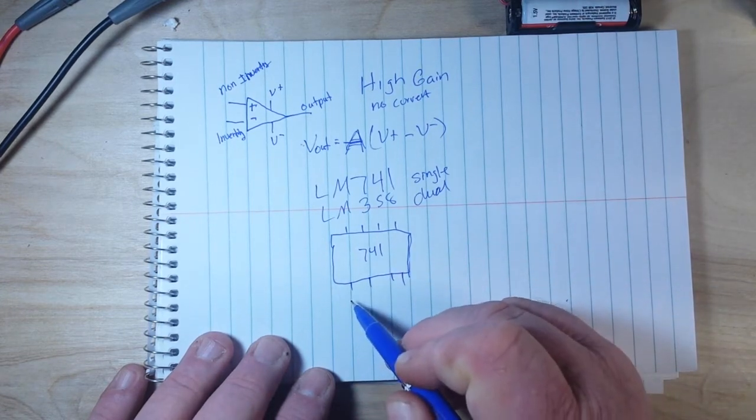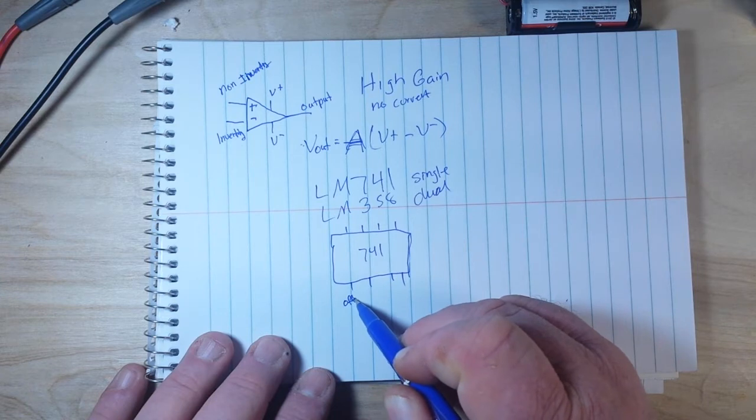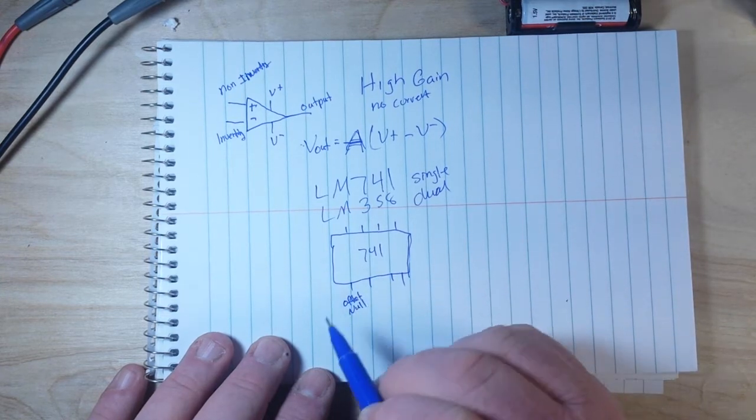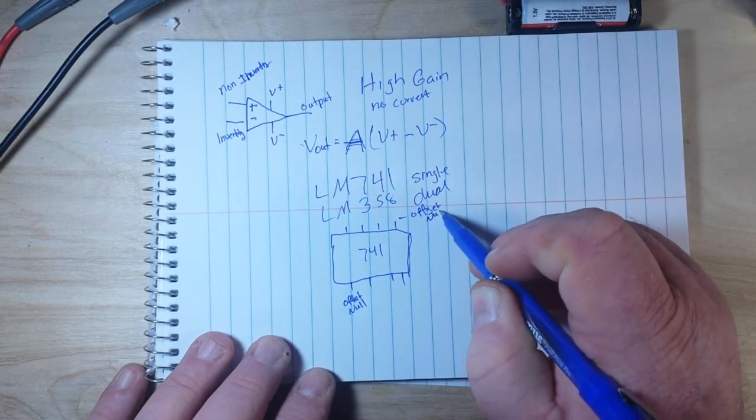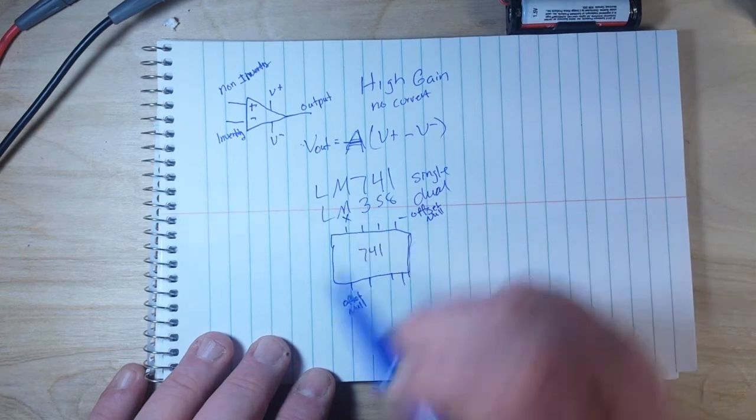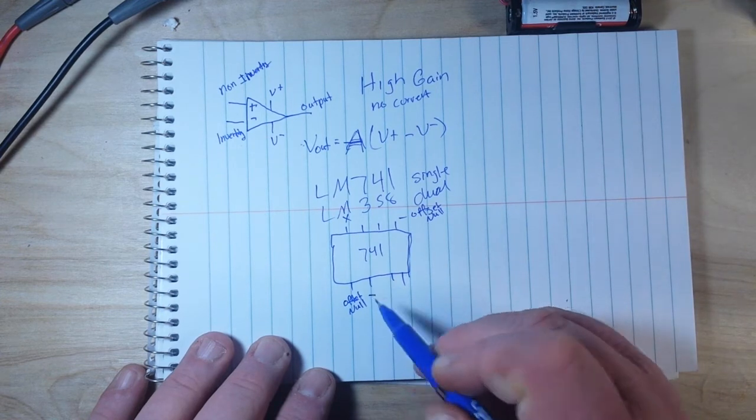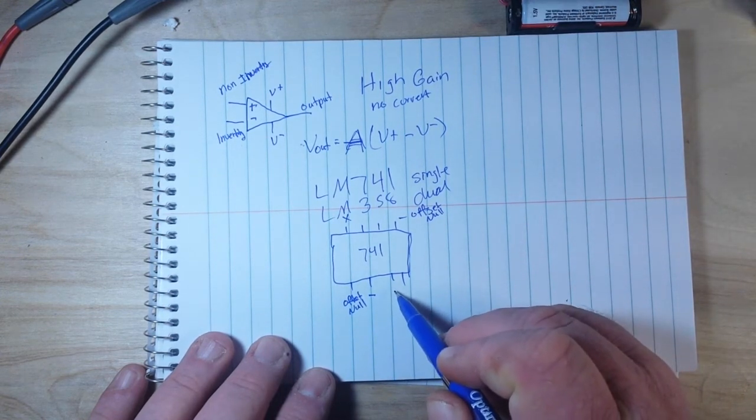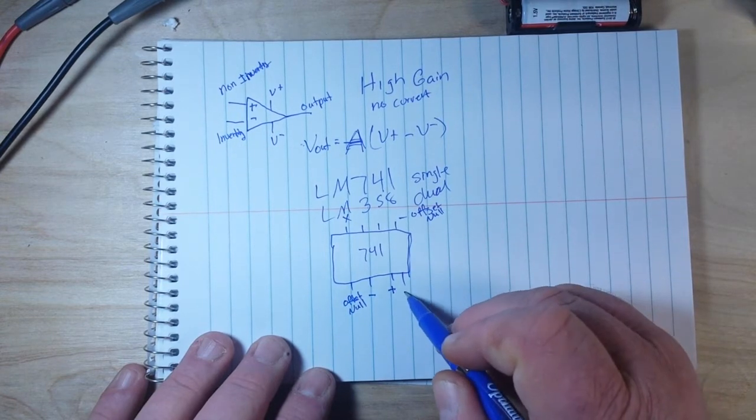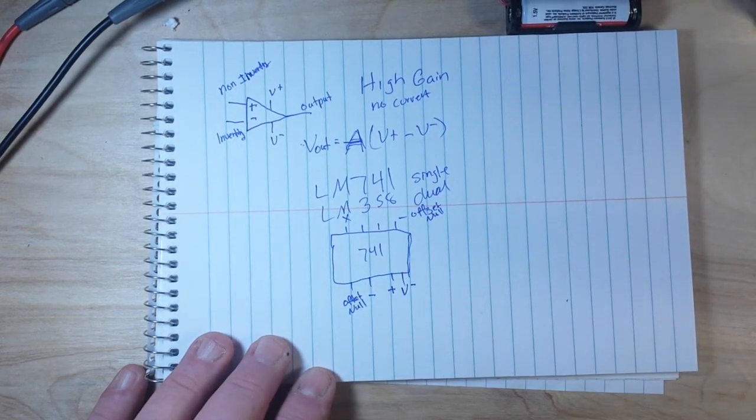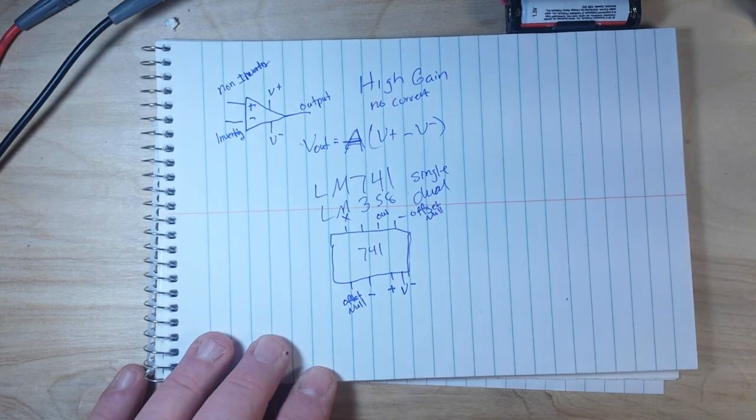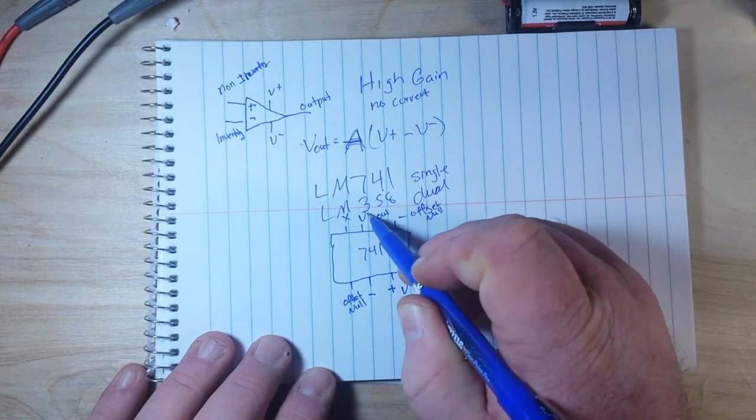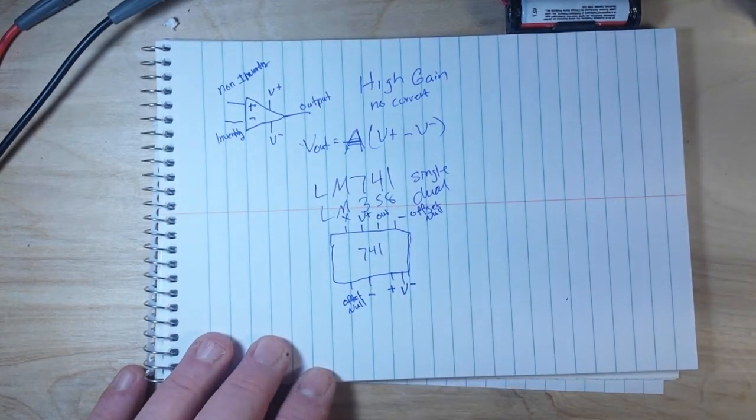Now pin one is offset null and so is pin five, offset null. And pin eight is not connected. So pin two is our inverting input, pin three is our non-inverting input, and pin four is our negative voltage source. Pin six is our output, and pin seven is our positive voltage source.